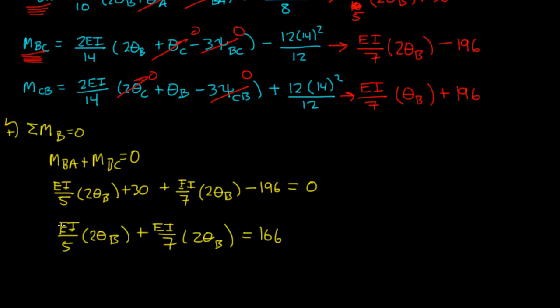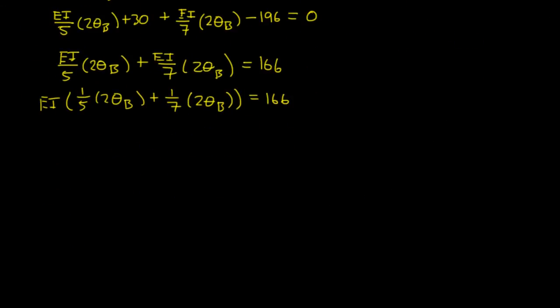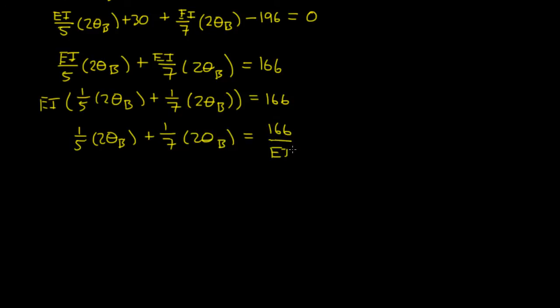And you can factor out EI and bring that to the other side. So you'll get EI times 1 over 5 times 2 theta B plus 1 over 7 times 2 theta B. I just factored out the EI. That's equal to 166. So you're left with 1 over 5 times 2 theta B plus 1 over 7 times 2 theta B is equal to 166 over EI. I just divided everything by EI.